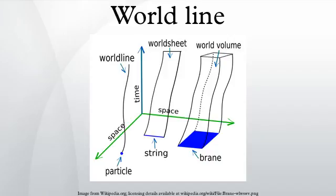World lines of particles or objects at constant speed are called geodesics. In special relativity these are straight lines in Minkowski space.